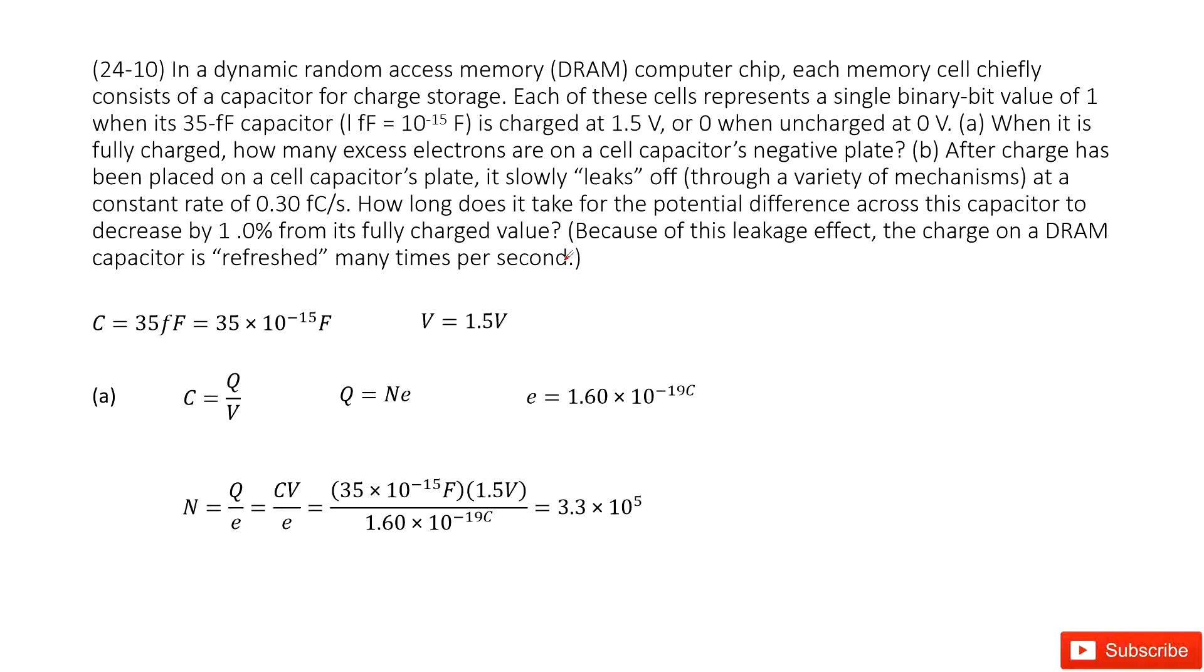So we can consider we have a capacitor. The capacitance is given as 35 femtofarads, and we can convert the unit to the international system unit. It tells us the potential difference is 1.5V when it is fully charged. Now it asks you how many excess electrons are on this capacitor's negative plate.